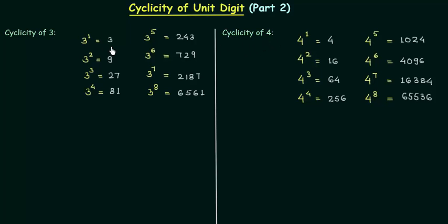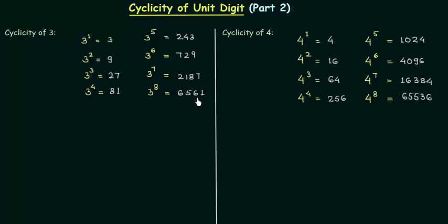3 raised to power 1 is 3, raised to power 2 is 9, raised to power 3 is 27, raised to power 4 is 81, raised to power 5 is 243, raised to power 6 is 729, raised to power 7 is 2187, and raised to power 8 is 6561.